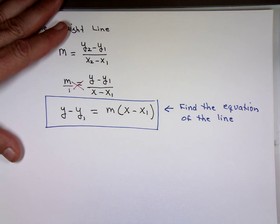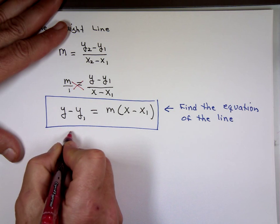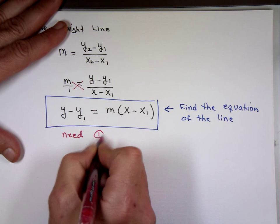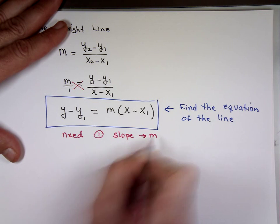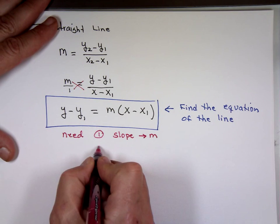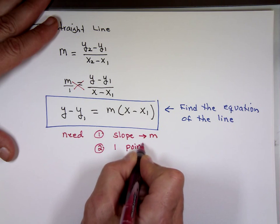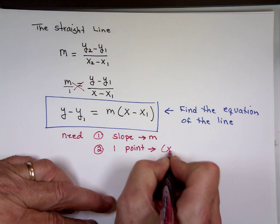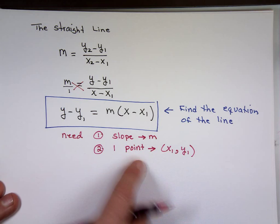To use this equation, there are two things that you need. First, we need the slope, and the slope gives us the value for m. The other thing we need is one point — not the y-intercept or the x-intercept, just one point. And that point gives us x sub 1 and y sub 1. So we need one point and we need slope.